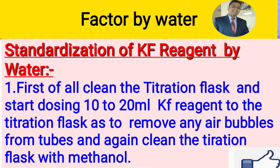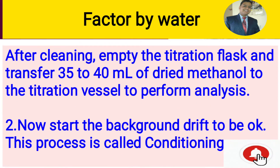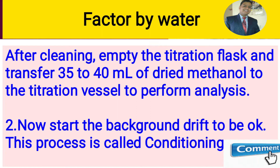For factor by water: first, clean the titration flask with dried methanol, then start dosing 10 to 20 ml of Karl Fischer reagent into the titration flask to remove any air bubbles present in the tubes. Then dispense this KF reagent and again clean the titration flask with dried methanol. Now take 35 to 40 ml of dried methanol in the titration flask and start the background drift. This process is called conditioning — it removes background moisture present in the titration flask.